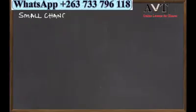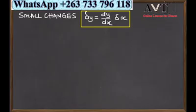Today we are going to look at small changes. The formula is Δy = dy/dx·Δx, which means the change in y equals the differentiation of y with respect to x times the change in x.